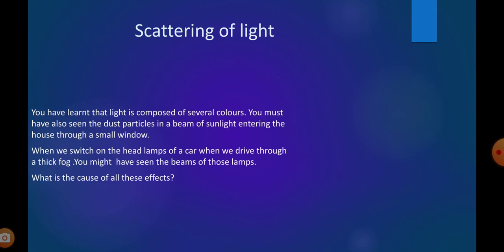Scattering of light. We have learned that light is composed of several colors. In 6th standard, you learned about reflection of light. White light consists of 7 colors. You must have seen the rainbow during the rainy season in the sky. You must have also seen the dust particles in a beam of sunlight entering the house through a small window.